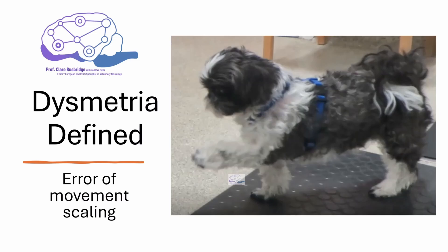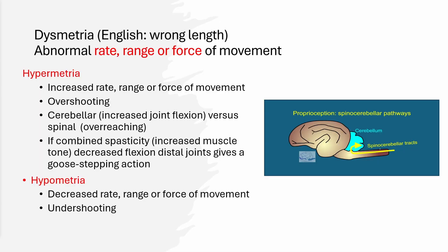This YouTube video explains dysmetria. It's part of a three-part series: the first is on proprioception, this is the second, and the third is on ataxia — three neurological terms that are closely connected, but useful to separate for better understanding. Dysmetria in English means 'wrong length,' but from a neurological point of view it means an abnormal rate, range, or force of movement. It describes how movement isn't coordinated properly.